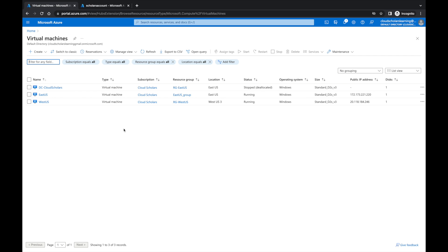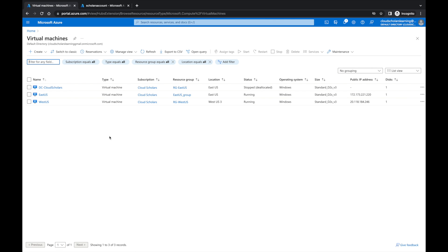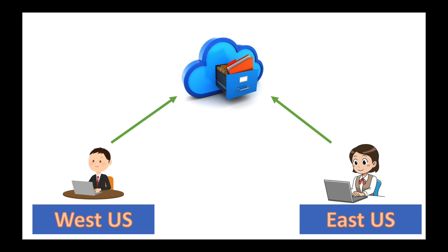On the next tab I can see three virtual machines: one is stopped — that's our DC Scholars file VM — and then we have a VM in East US and a VM in West US. Before jumping into those VMs, let me go into a PowerPoint deck to show exactly what we're going to test. We'll have a virtual machine in West US and a virtual machine in East US, and in the cloud is our Azure file storage for the file share.